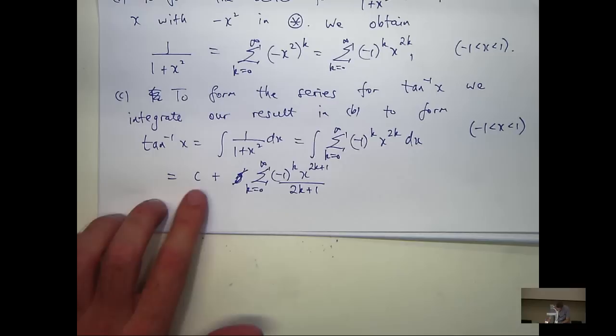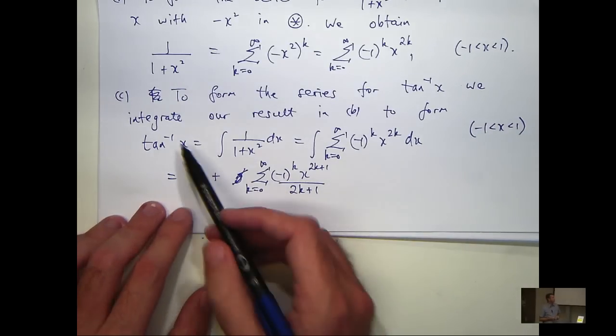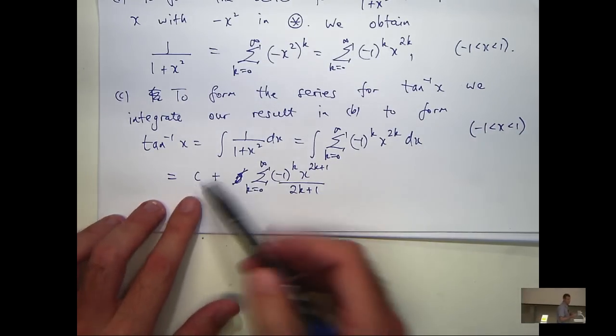Now, how do I get my constant of integration? Anyone know? Yeah, so if I sub in x equals zero in this equation, the left-hand side's zero, the right-hand side's going to be zero, and I just get c equals zero.